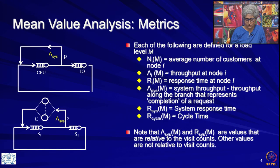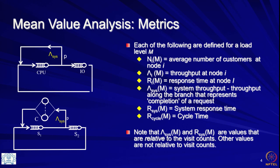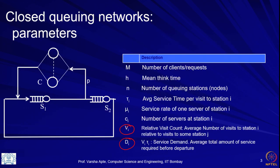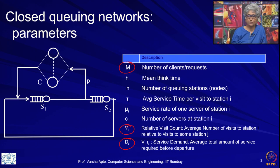Let us go over a little slowly on the metrics that the mean value analysis is going to derive. In closed queuing networks, each of the metrics are defined for a load level M. This is similar to all metrics in open queuing networks — in open queuing, everything is a function of lambda, the arrival rate. Here also the metrics are functions of all the parameters, but we particularly express them in terms of this load parameter M.